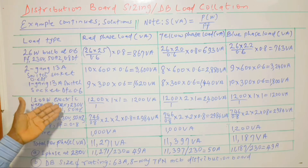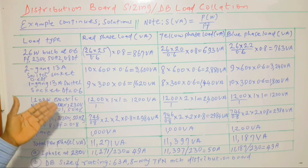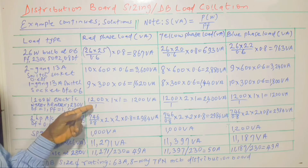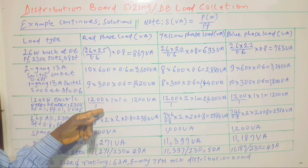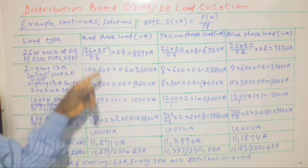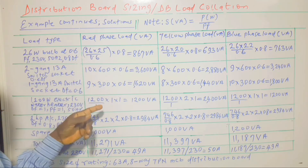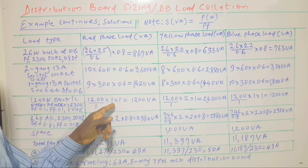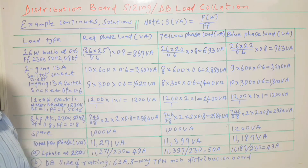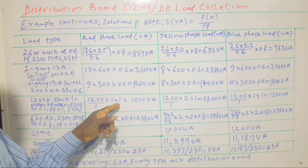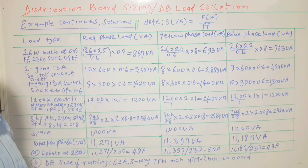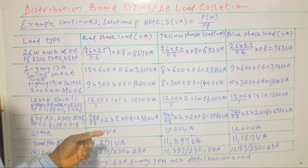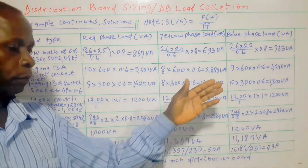For the electric water heater — a heating load — the power factor is 1, so the active power is divided by 1. We also multiply by 1 because there is only 1 water heater connected to the red phase, and the diversity factor is also 1. We don't apply a diversity factor when there aren't many of the same items. Similar calculations apply for the other phases.